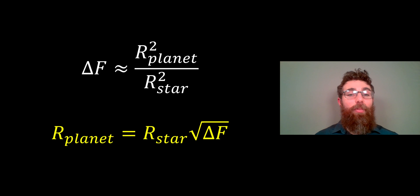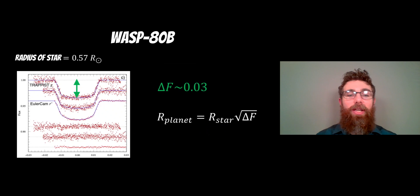We can use an example to see how this works and the actual published radius of the planet. If we take WASP-8Tb, this is a planet discovered around a star that's about 57% the size or the radius of the sun—0.57 times the radius of the sun.